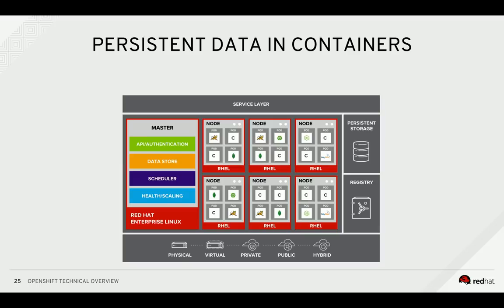Applications are only as useful as the data they can manipulate. Containers are natively ephemeral, meaning data stored in a container is not retained when the container is restarted or recreated. OpenShift provides a persistent storage subsystem that will automatically connect real-world storage to the right pods, giving you the ability to run containerized versions of databases and legacy apps that require storage on disk.